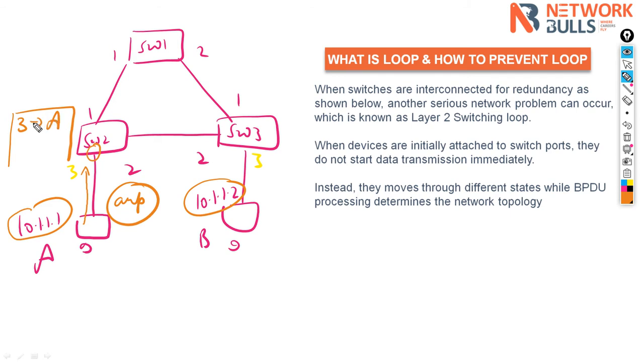It will always learn the source MAC in the packet, so source MAC would be A. Now we know that ARP is always broadcast, so switch one will send this packet to port three and port one. In this case, switch three will also update the MAC address table that on port number two I'm learning source MAC that is A.